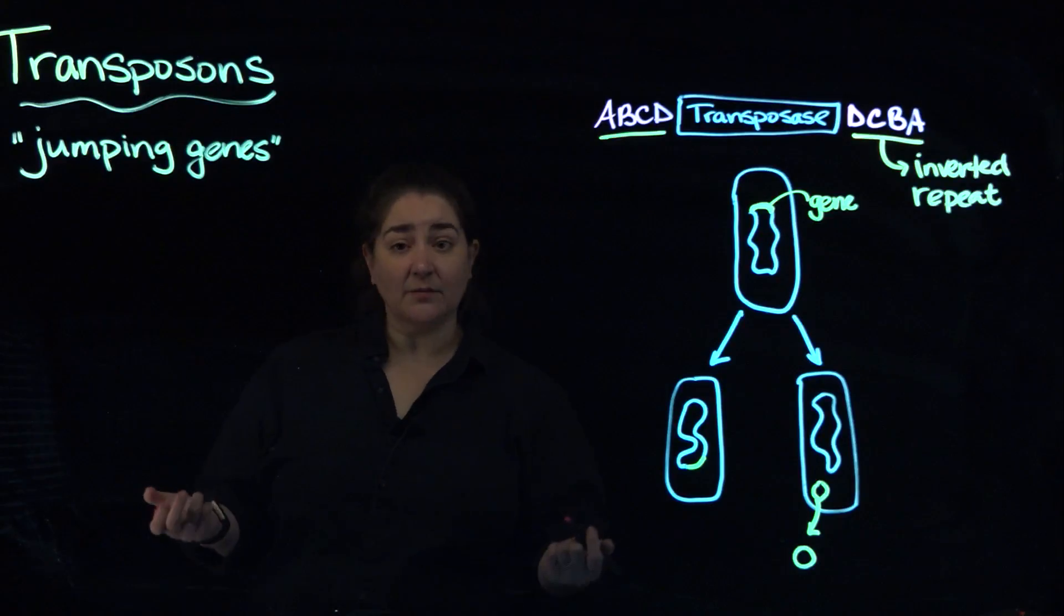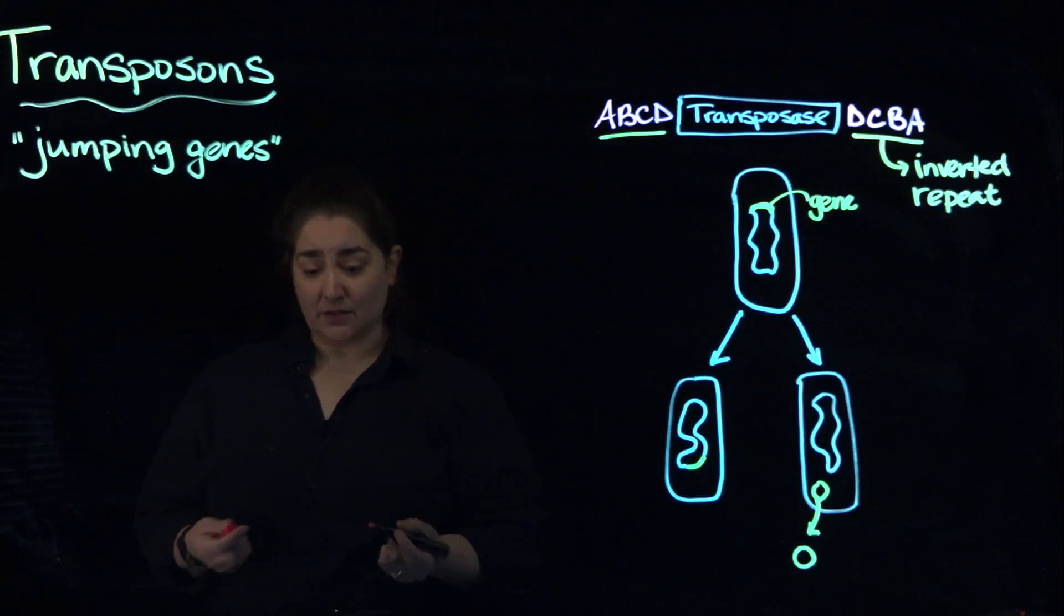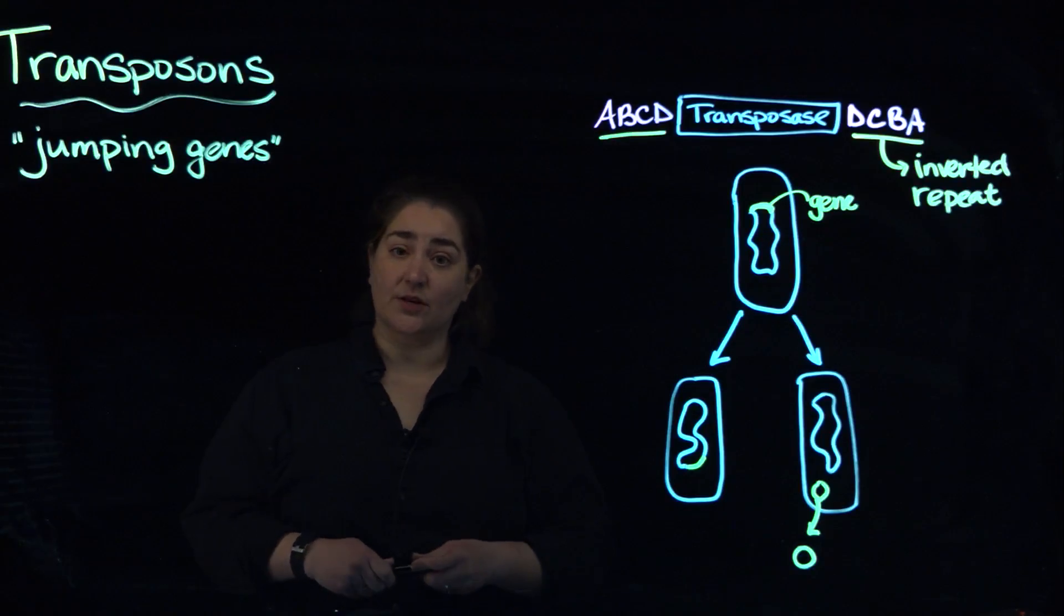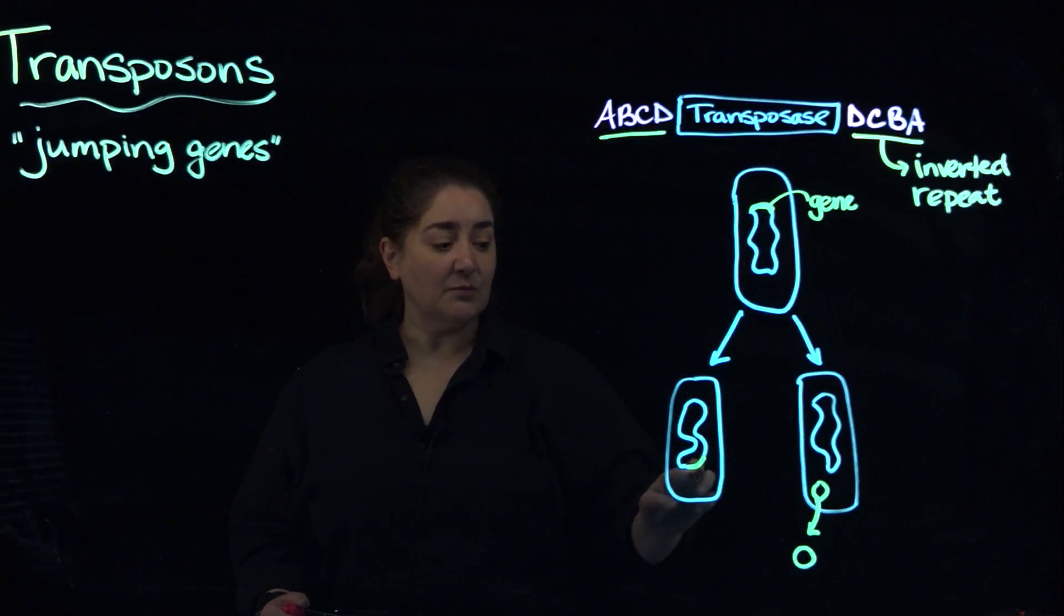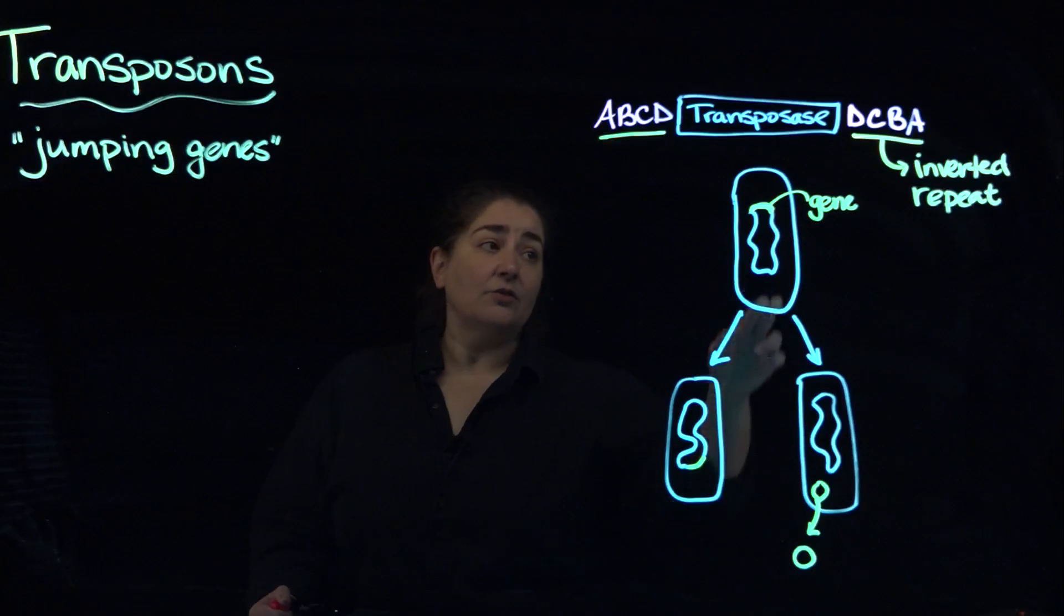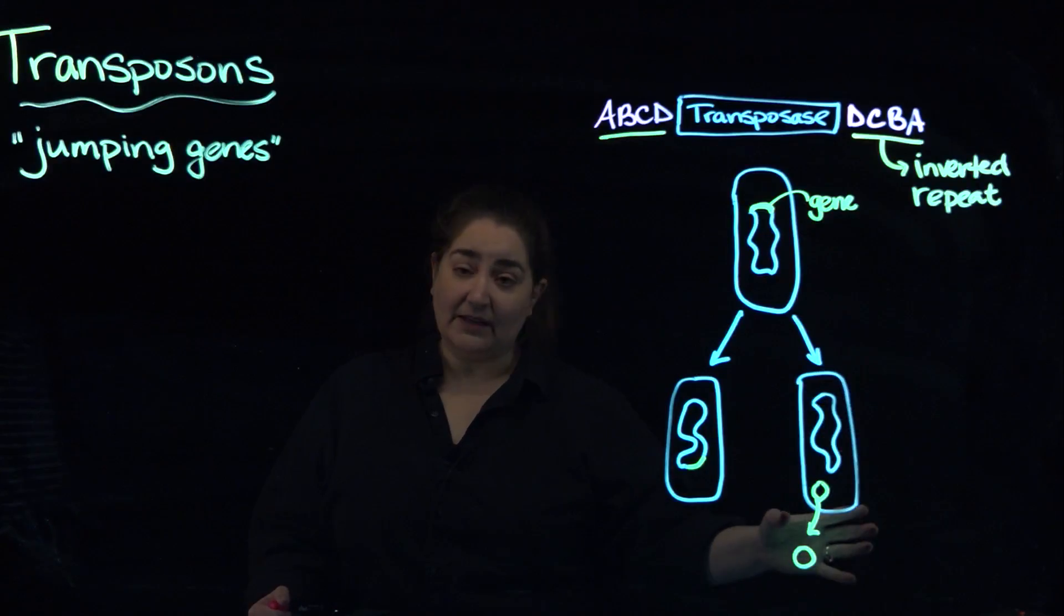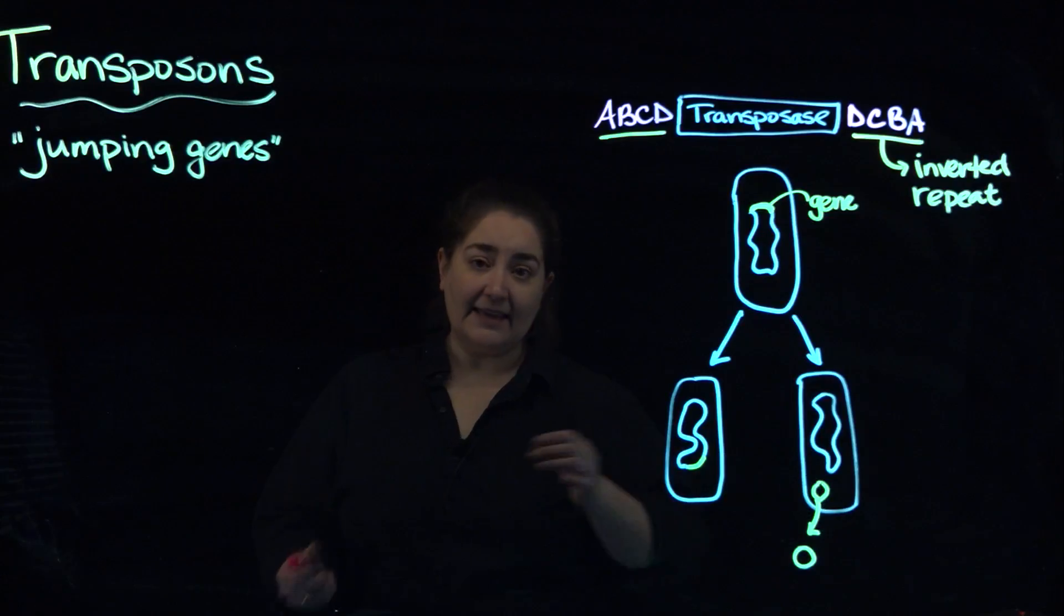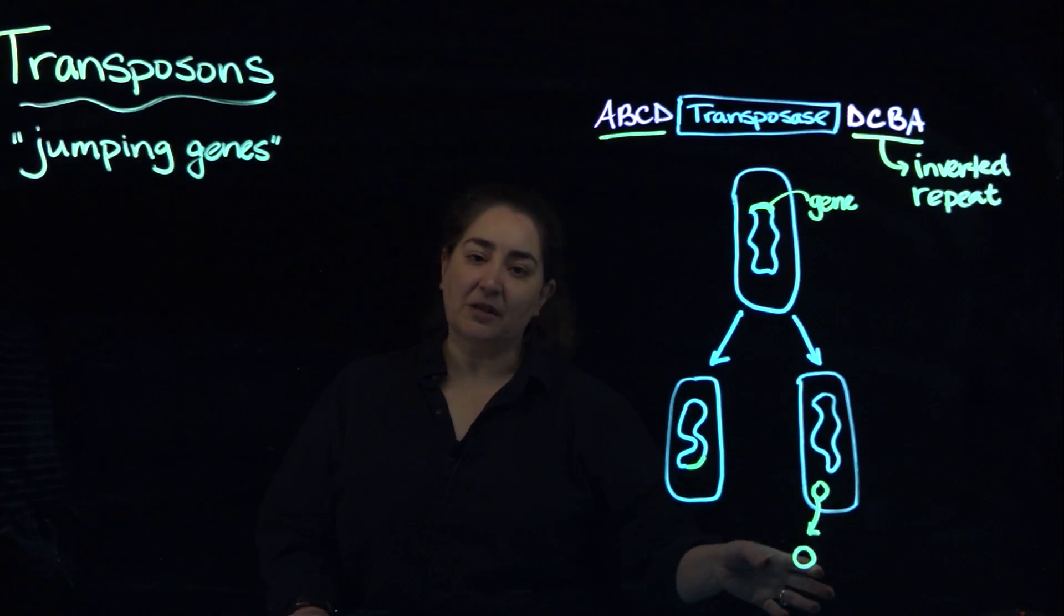Transposons are sometimes referred to as jumping genes because what happens with transposons and transposable elements is you get bits of DNA that can be moved around within the genome of an organism. You can also have bits of genes that get removed from an organism, and in the case of bacterial cells, when you remove that bit of DNA, it'll circularize and become a plasmid.